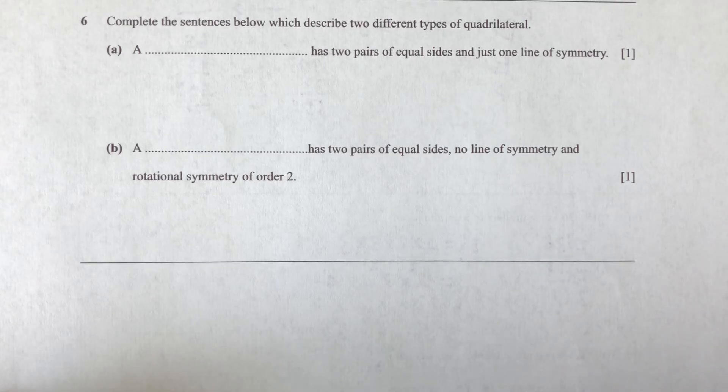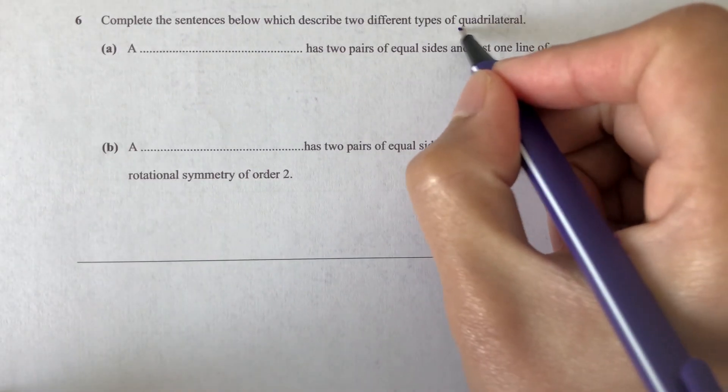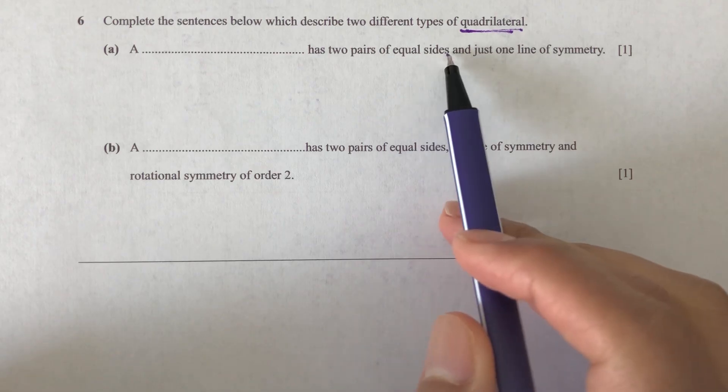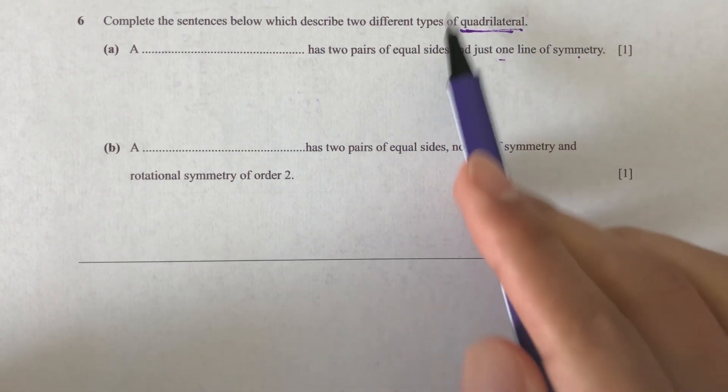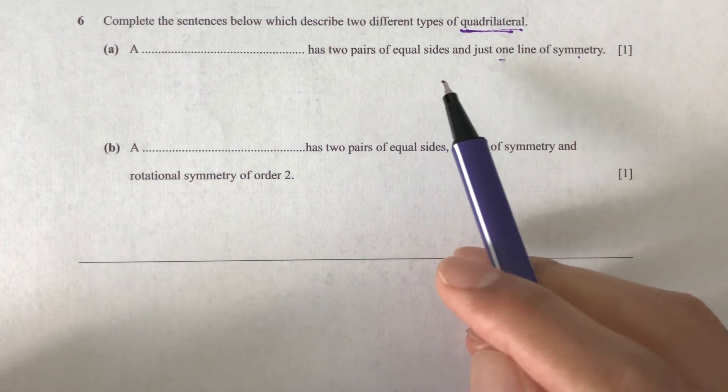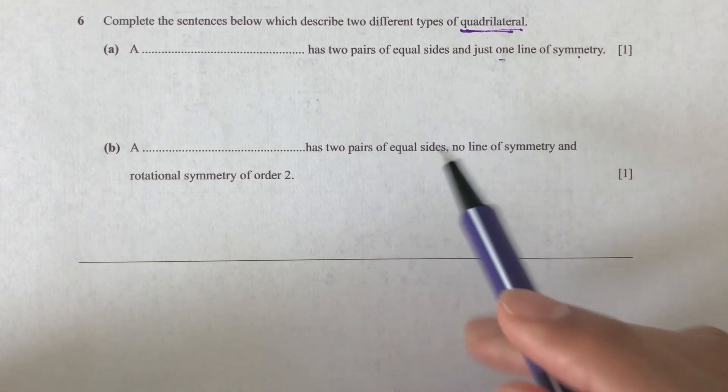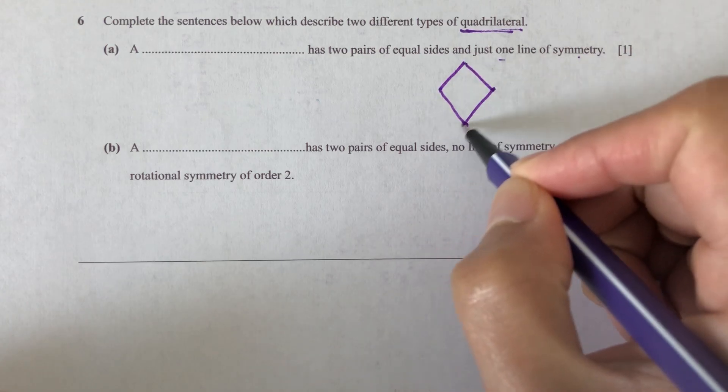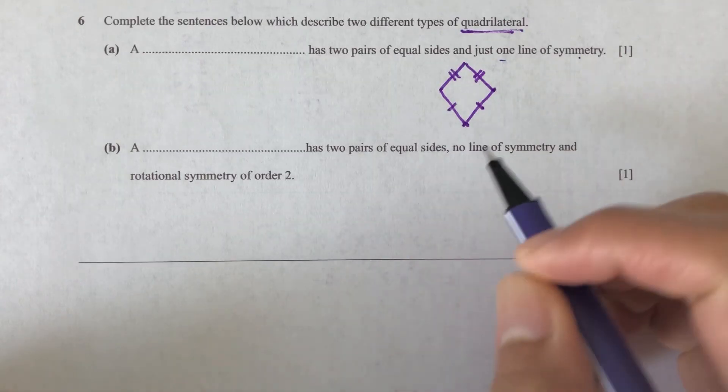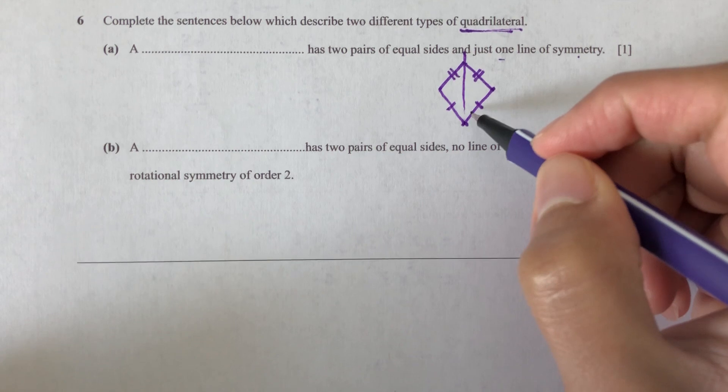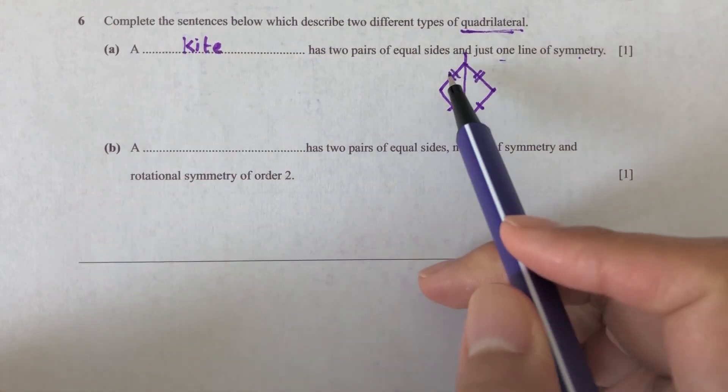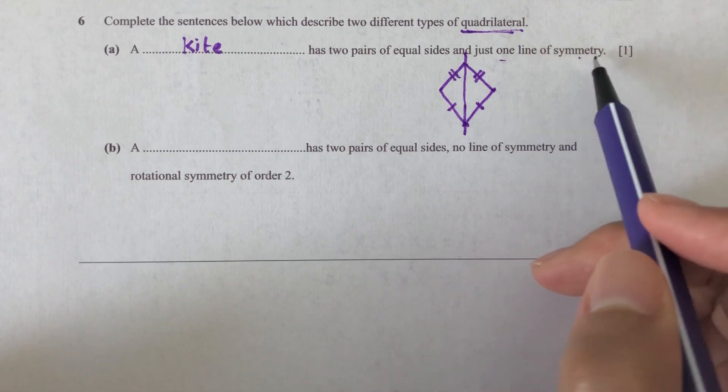Question number six. Complete the sentences below, which describes two different types of quadrilateral. So at least we know they have four sides for the shapes. So now part A. So what has two pairs of equal sides and just one line of symmetry? So what kind of quadrilateral do you know? You know, square, rectangle, rhombus, kite. Also we have parallelograms. So for this one, it will be a kite. Why? Because if you look at a kite, these two sides are equal and these two sides are equal. And they only have one line of symmetry in the middle.